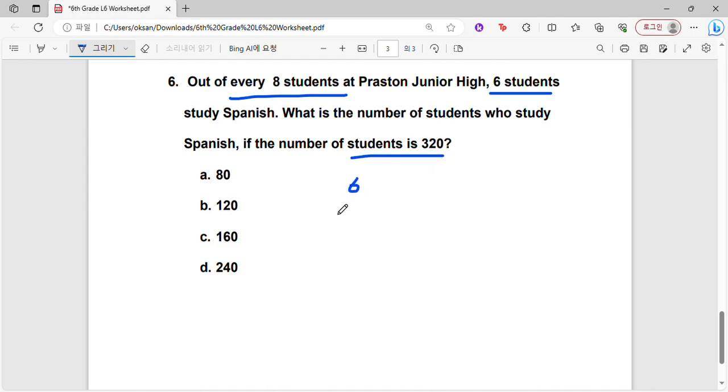Okay, so 6 students out of every 8 students study Spanish, right? And so if the number of students is 320, what would be the number of students who study Spanish? So again, let's find the number that we can multiply by 8 in order to get 320. So we would just have to do 320 divided by 8.